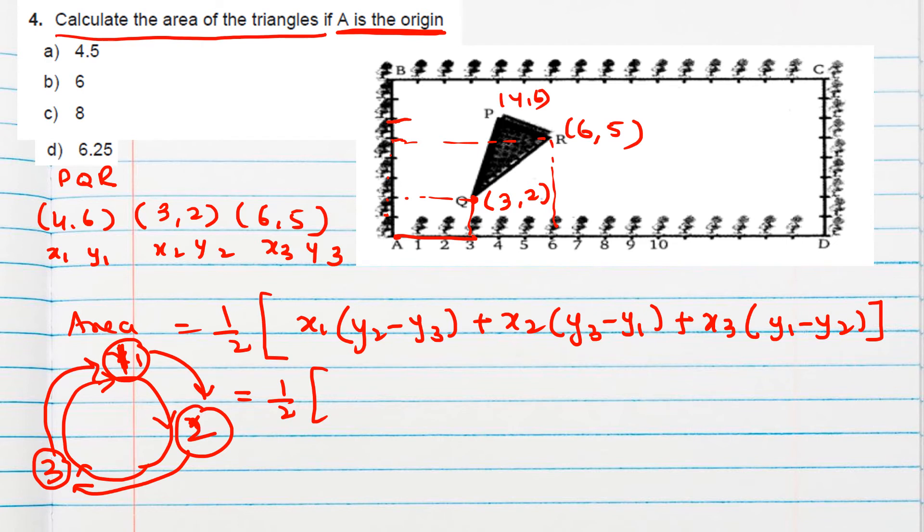Now substitute the value 4. Then 2 minus 5. And remember this: if we get the negative area, we will convert this into positive. Because area cannot be negative. Right?